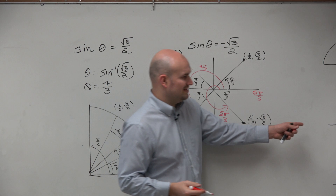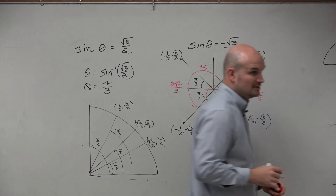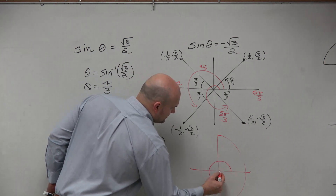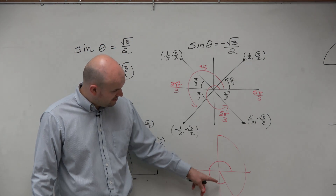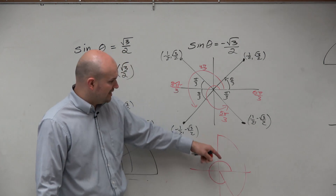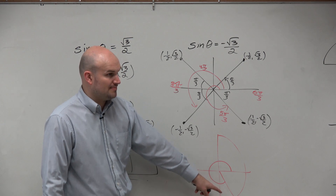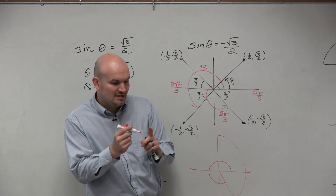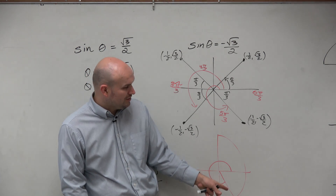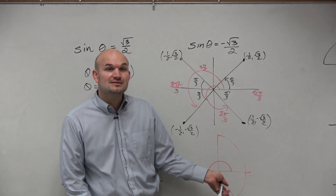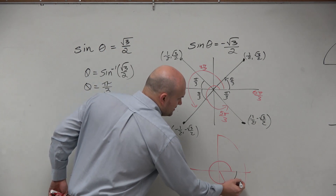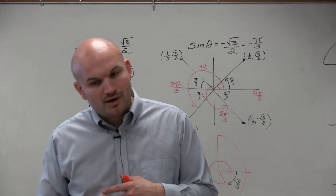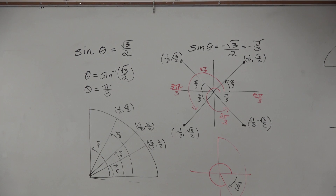However, when we graph this — does 5 pi over 3 go outside of the restricted domain? Here's the restricted domain. When you graph 5 pi over 3, does it go outside of that half circle? Yes, it's outside of it. You have to rotate through the second and third quadrants to get to the fourth, so this is not the answer. We need an angle restricted between negative pi halves and pi halves. We need a coterminal angle — one with the same initial and terminal side. Negative pi over 3. So the answer is negative pi over 3. Don't always think it's just going to be the negative form if the value is negative — that's not always the case.